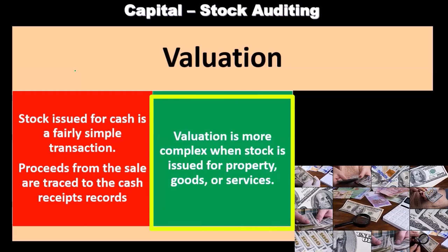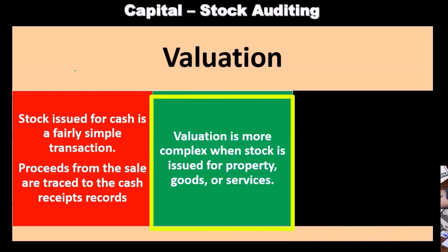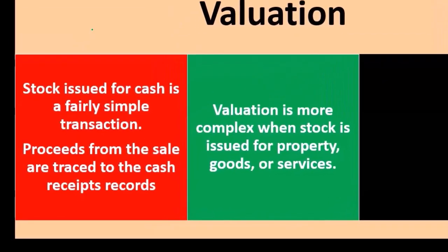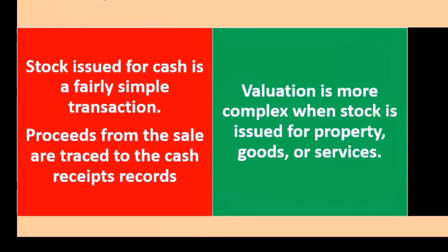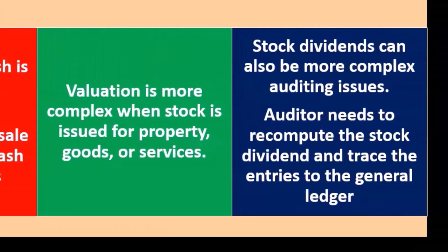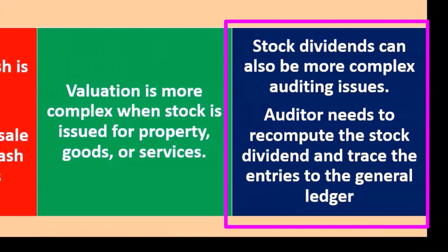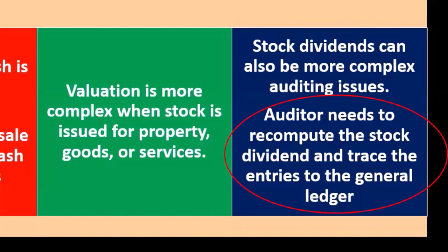Valuation becomes more complex when stock is issued for property, goods, or services. While other traded stock might help establish a reference value, it is more complex than a simple cash transaction. Determining the market rate for the received property, goods, or services adds further difficulty. Stock dividends can also be a more complex auditing issue — instead of returning value to shareholders as cash, it is given as stock, and the auditor needs to recompute the stock dividend and trace the entries to the general ledger.